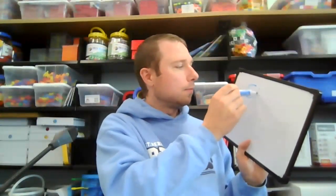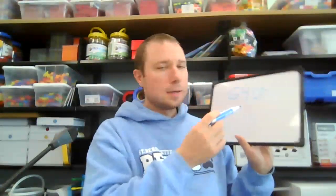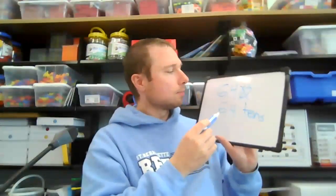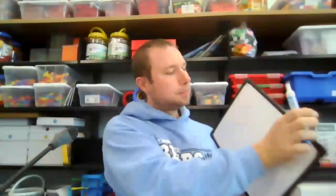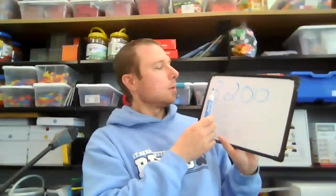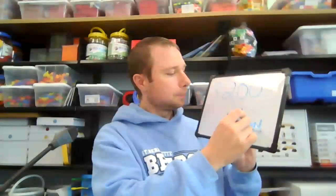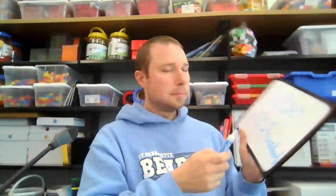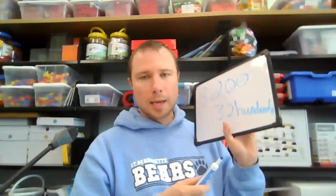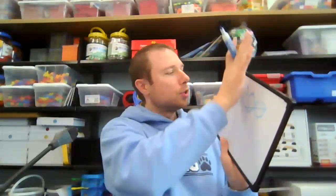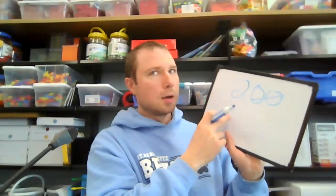Another way of saying six hundred and forty: tens have one zero, so we can take out the zero and it becomes sixty-four tens. We could also replace the word hundreds, take out the two zeros, and it becomes thirty-two hundreds. I would start with tens — taking away the zero — then move up once they've mastered that: 100, 200, 500, 800, taking away the two zeros.